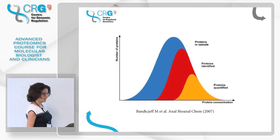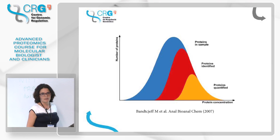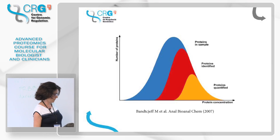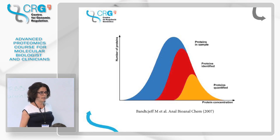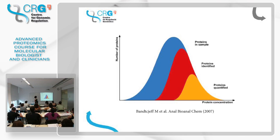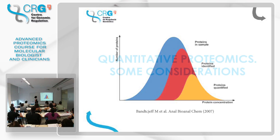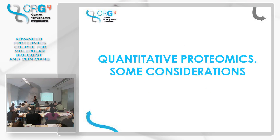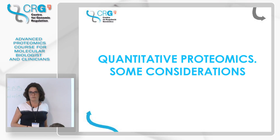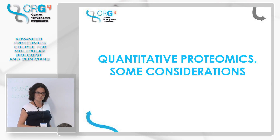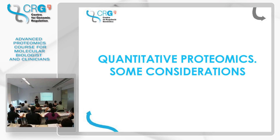Things are becoming each time more complex. As we saw yesterday, we never identify the whole proteome in a complex sample — we only identify a portion of it because of technological limitations. But when we want to quantify, we need high-quality data, and sometimes we can quantify even fewer proteins than the ones we identify. There are many methods for quantitative proteomics. I don't want this class to be a mere catalog of these methods, so first I want to introduce some important concepts, and then we will see some examples. It's not an exhaustive review — just some relevant examples.